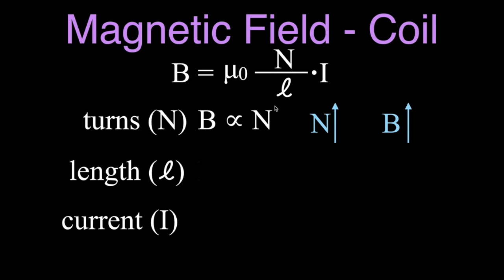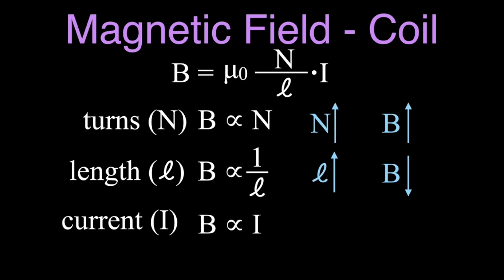The length L is in the denominator, so the length and the magnetic field strength are inversely proportional to each other. If we increase the length, we decrease the magnetic field strength. If we decrease the length — either stretching or squeezing the coil — we increase the magnetic field strength. The current is what produces the magnetic field, so those two are directly proportional: increase the current, increase the magnetic field strength; decrease the current, decrease the magnetic field strength.